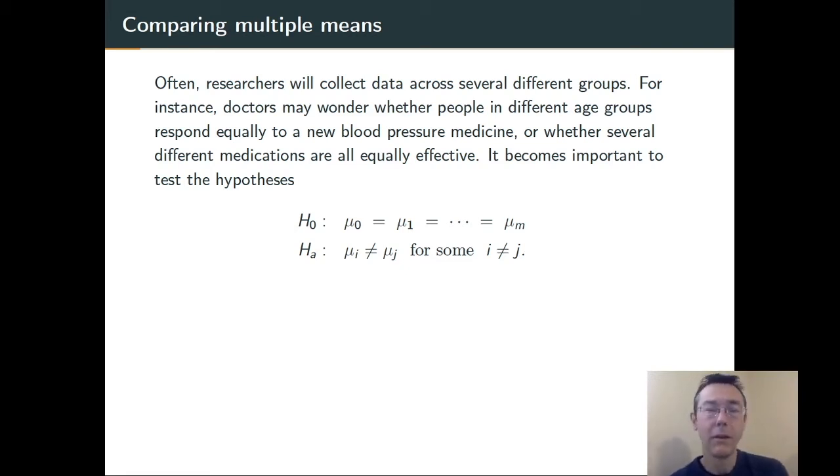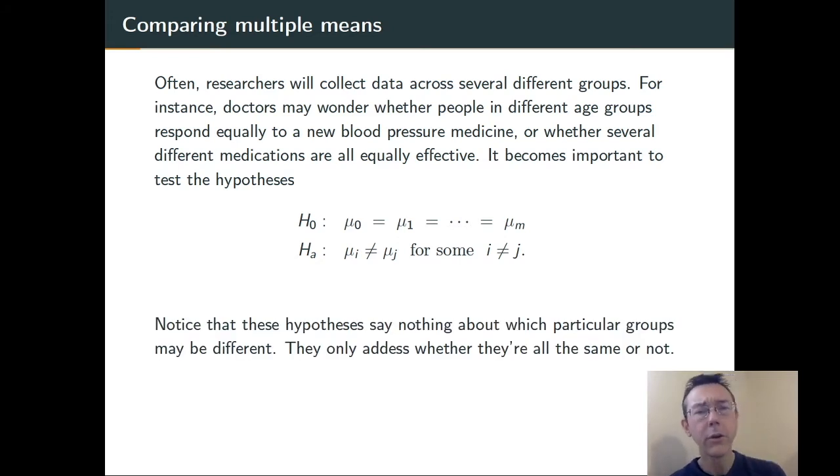Here's the formal statement of the hypotheses that we're looking at. In particular, notice that it is just one big null hypothesis. We're just saying, are all of the means equal, or are at least two of them different from one another? We're not specifically saying anything about where those differences might lie, in other words, which groups might be different. At the end of all this, we're going to have that as an open question, even in the case where we reject the null hypothesis.